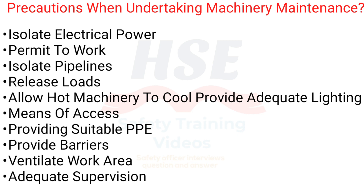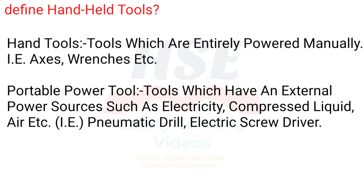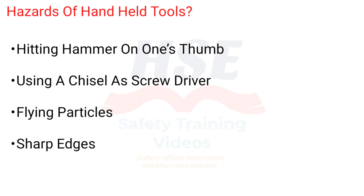35. Ventilate work area. Adequate supervision. Define handheld tools: Hand tools - tools which are entirely powered manually, that is axes, wrenches, etc. Portable power tools - tools which have an external power source such as electricity, compressed liquid, air, etc. That is pneumatic drill, electric screwdriver.